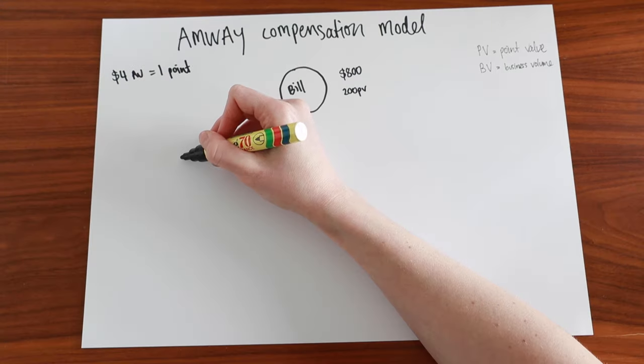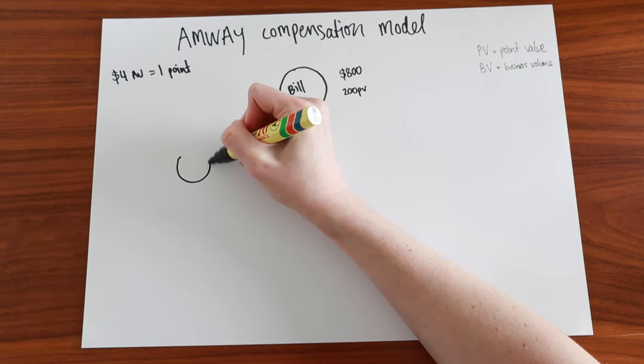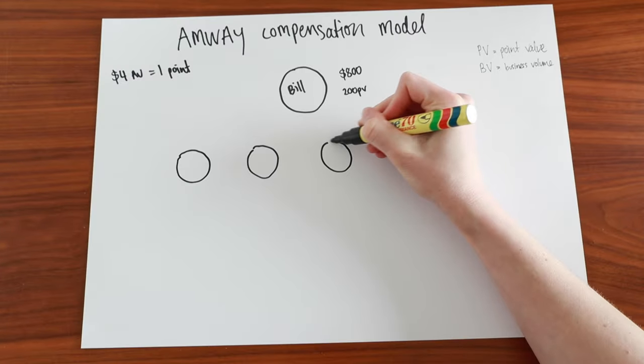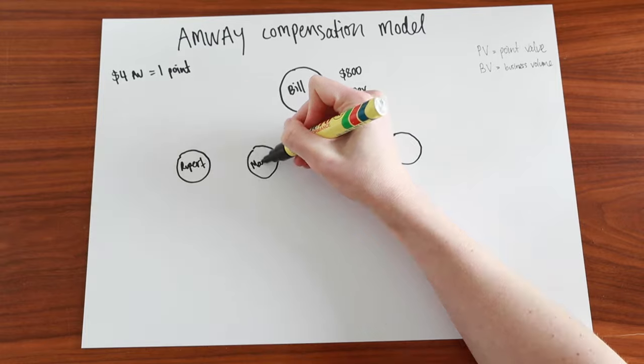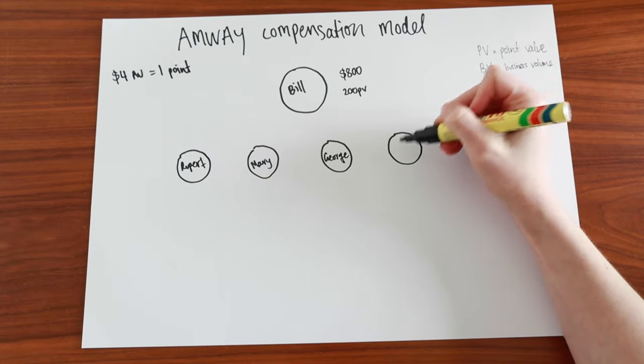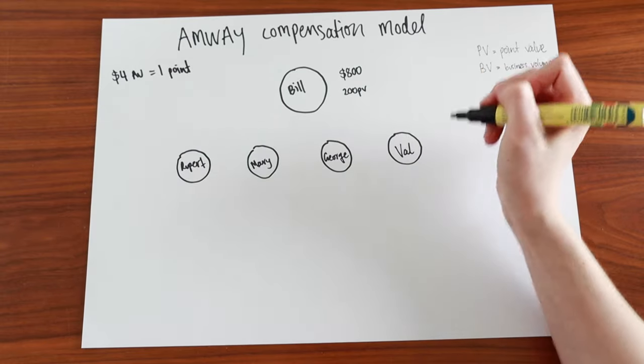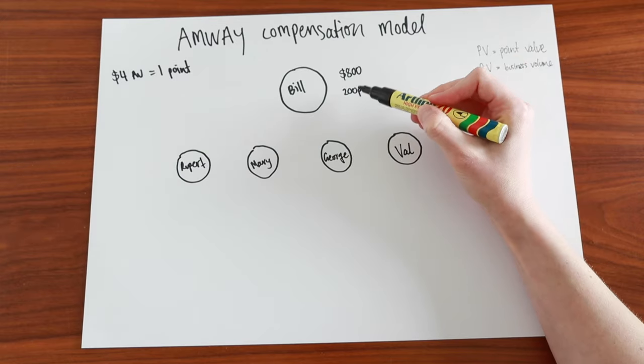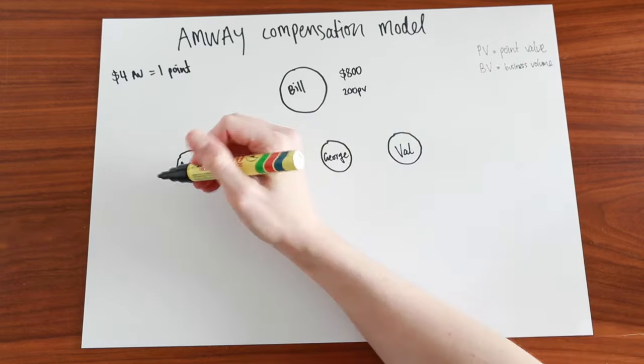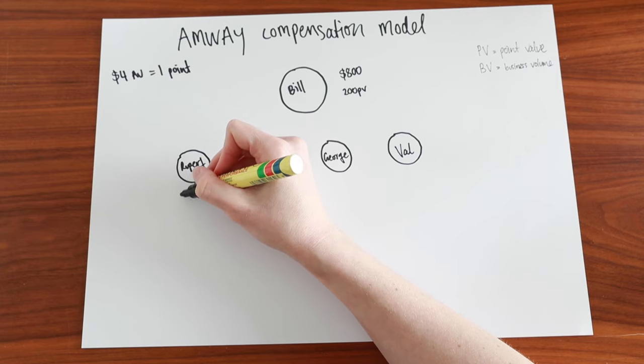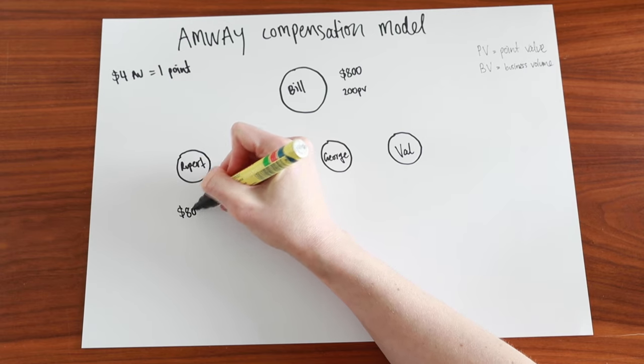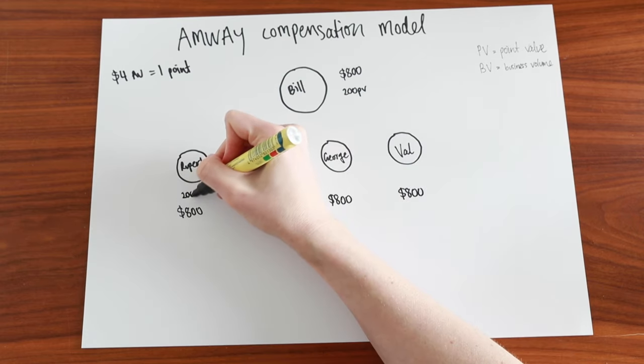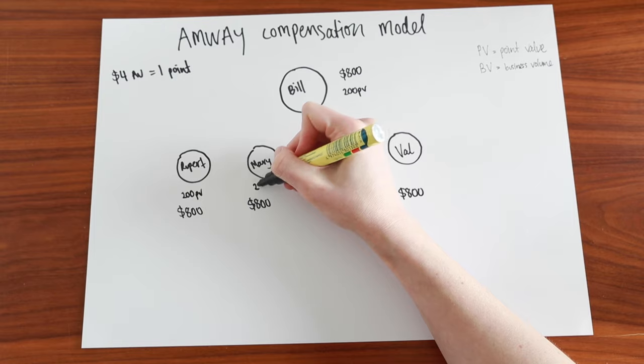Now, Bill has four people in his team or his downlines or otherwise referred to as partnerships: Rupert, Mary, George, and Val. In this example, let's say that each of these four people also spend the same amount Bill does. So they each spend $800 on Amway products themselves, and that is also 200 PV.